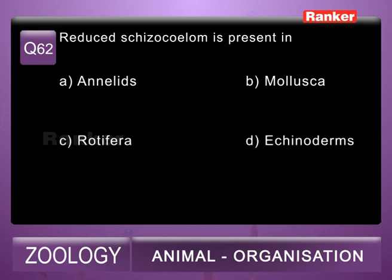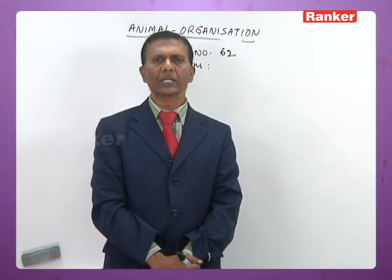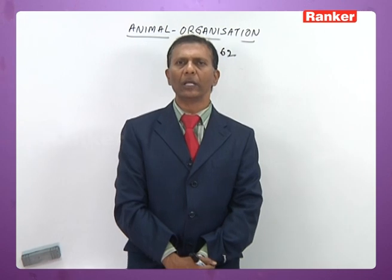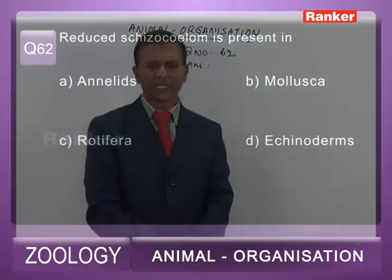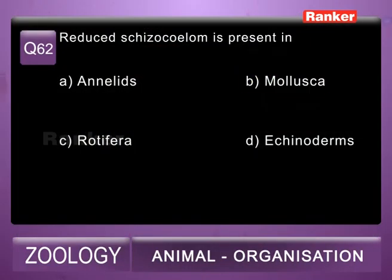Question 62: reduced schizocoel is present in A) Annelida, B) Mollusca, C) Rotifera, D) Echinodermata. In Mollusca the schizocoel is modified into hemocele, so it is reduced. The 62nd question correct answer is B, Mollusca.